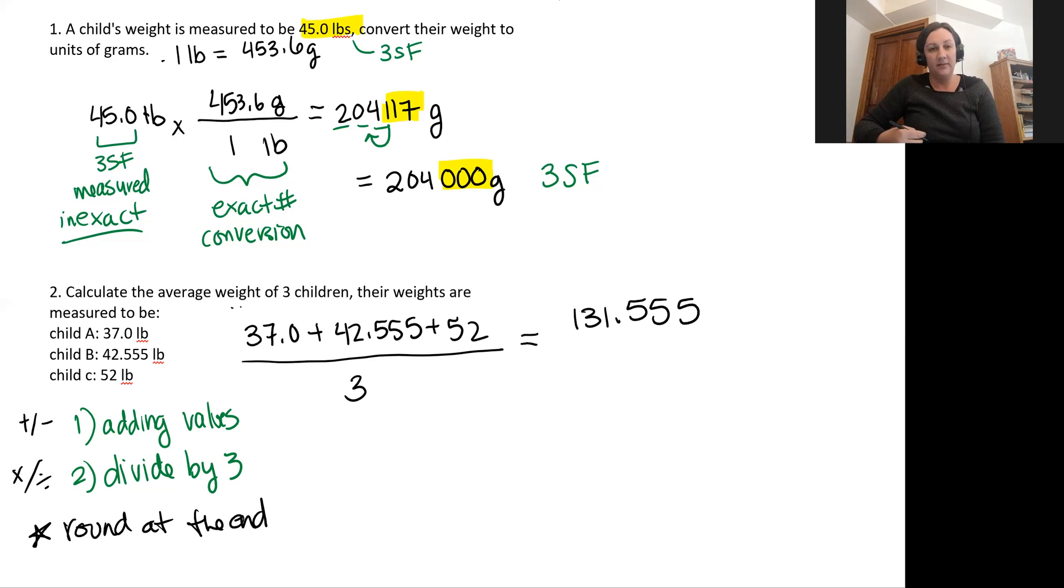So thinking about my significant figures here, this will then be divided by three in the next step of my calculation. But thinking about significant figures, I have for my first value three significant figures and one decimal place. I have for my second value five significant figures and three decimal places. And I have two significant figures for my last one and zero decimal places. So what I care about when doing addition or subtraction is the number of decimal places of each of these values rather than the sig figs. So that means I am going to report my value to the one with the least decimal places, which is at 52.